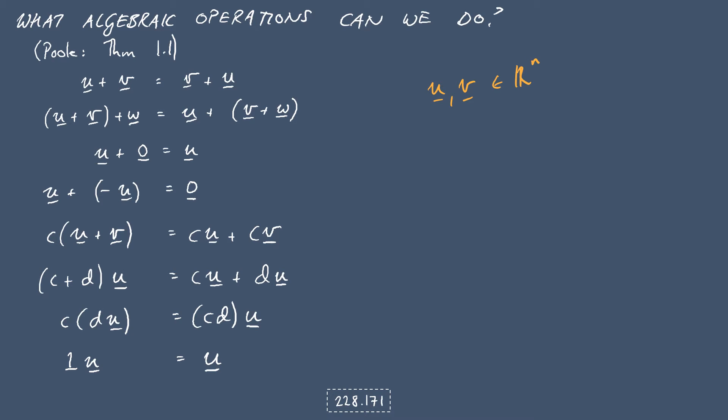So it doesn't matter whether we add u plus v or v plus u, you get the same thing. It doesn't matter if you've got three vectors u, v, and w, so we'll add w to our list here as well. It doesn't matter in which order you add them together, you'll get the same result, no matter if you add u plus v first or v plus w first, that's good. Adding 0 to u doesn't change it, no surprises there.